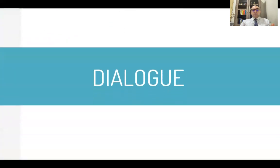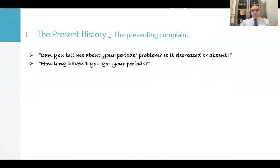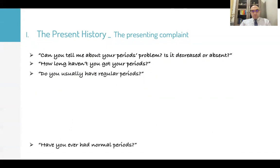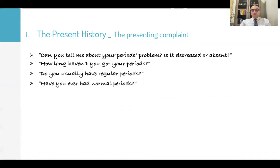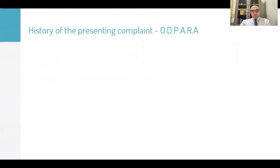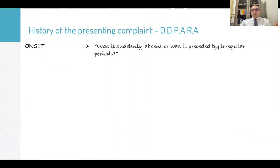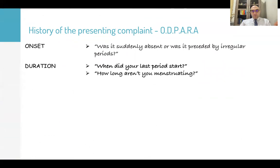For the dialogue and presenting complaint, ask: 'Can you tell me about your period problems? Is it decreased or absent? How long haven't you had your periods? Do you usually have regular periods? Have you ever had normal periods?' — especially important in primary amenorrhea. For the history of presenting complaint, use the mnemonic ODBARA. O is onset: 'Was it suddenly absent or was it preceded by irregular periods?'